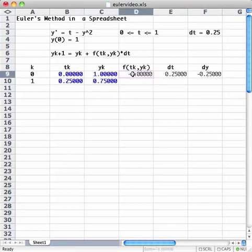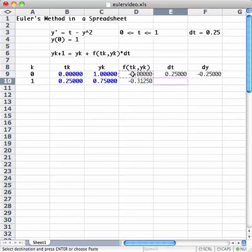I can copy the formula I put in for f, bring it down to the next row. I want to set this cell, the dt cell, equal to the cell above it.